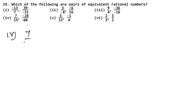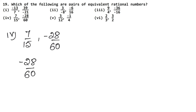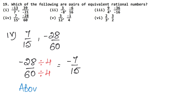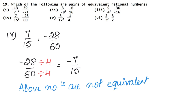The next part is 7 upon 15 and minus 28 upon 60. If we see minus 28 upon 60 and divide both by 4, we get minus 7 upon 15. Since one is positive and the other is negative, the above numbers are not equivalent rational numbers.